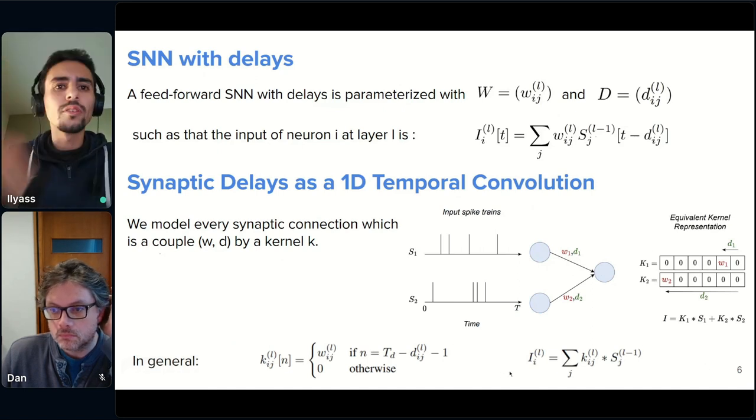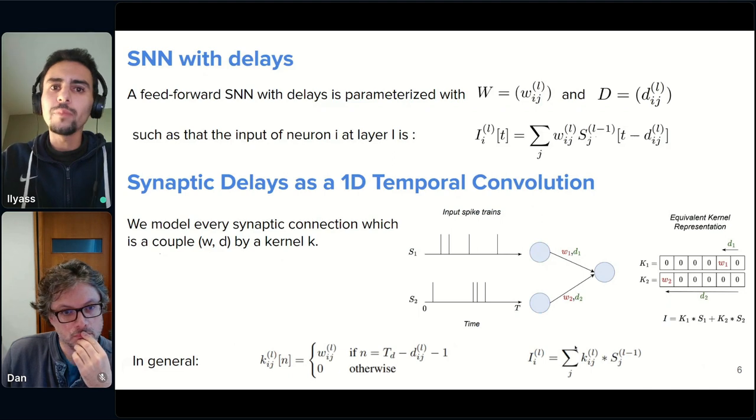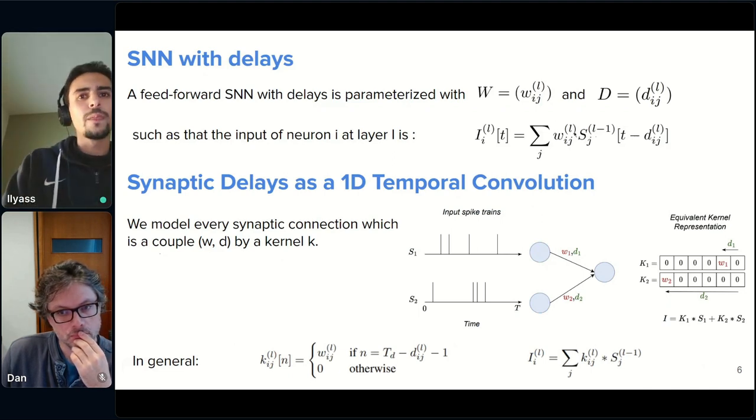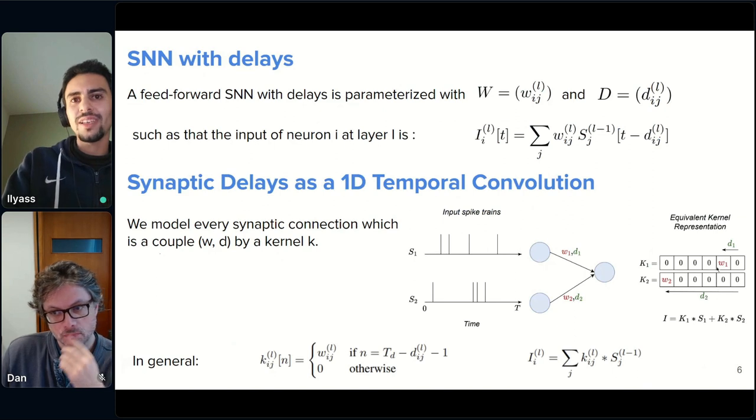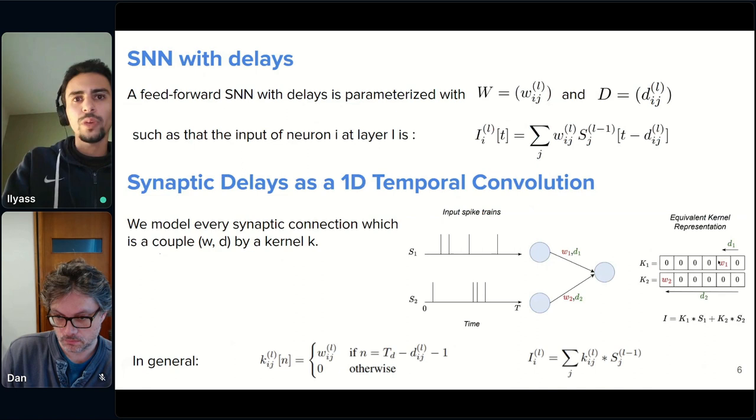So, more generally, these equations describe how this will work. The only difference is that now we sum the convolutions with the kernel instead of just multiplicating the weights. So, now this is the first part of the method. But the most important, the most interesting thing is how are we going to learn these delays or equivalently positions of the weights in the kernels.